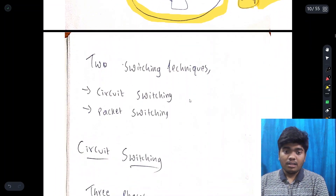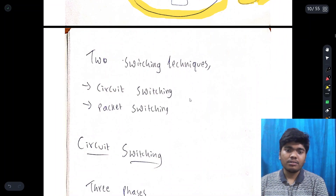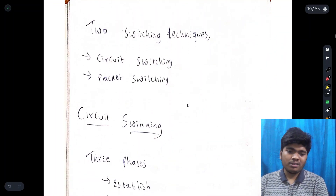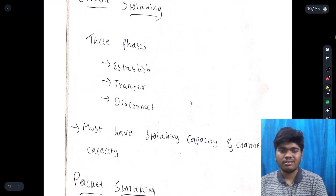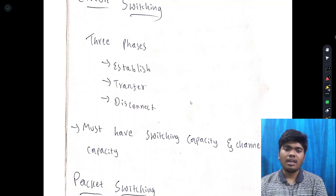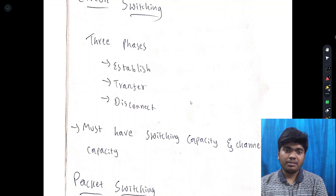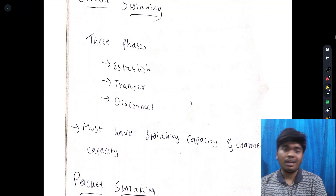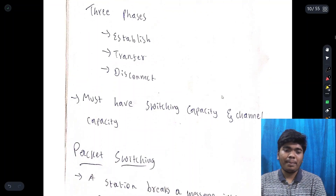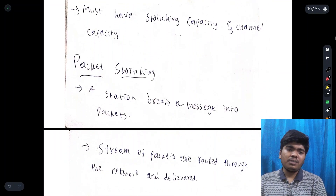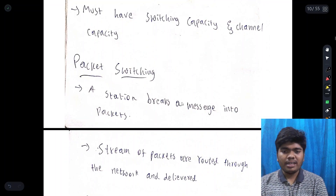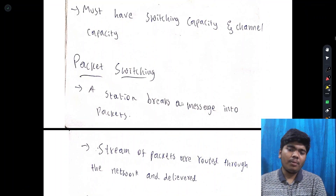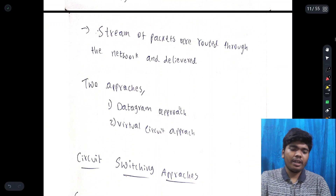There are two switching techniques: circuit switching and packet switching. Circuit switching consists of three phases — establish, transfer, and disconnect — and must have switching capacity and channel capacity. It establishes a route, transfers data, then disconnects because that route will be used by another service. Packet switching is something where a station breaks a message into packets; a stream of packets is then routed through the network and delivered.